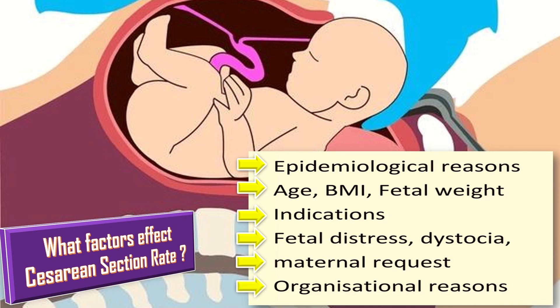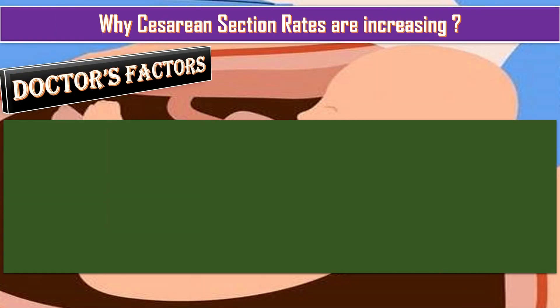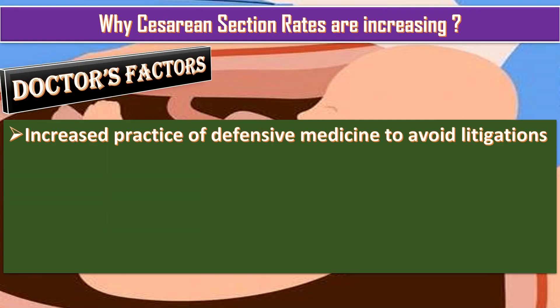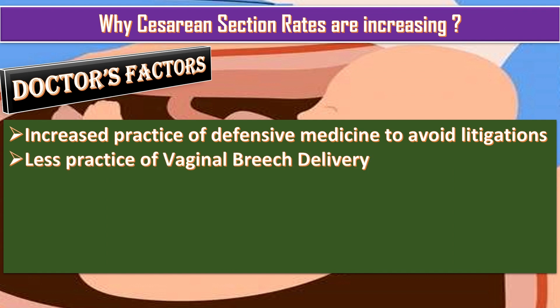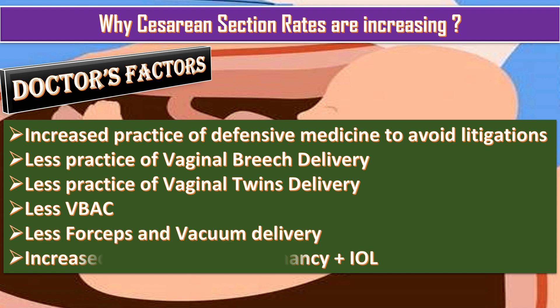Doctor factors responsible for increasing cesarean section rate include increased practice of defensive medicine to avoid litigation, less practice of vaginal breech delivery, less practice of vaginal twin delivery, less vaginal birth after cesarean section, less forceps and vacuum delivery, and increased monitoring of pregnancy plus induction of labor.